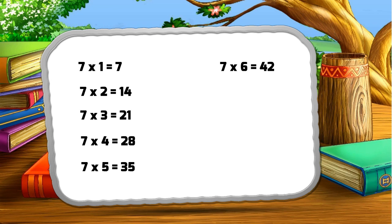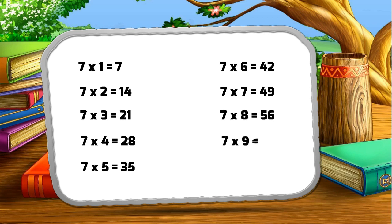Seven six za forty-two, seven seven za forty-nine, seven eight za fifty-six, seven nine za sixty-three, seven ten za seventy.